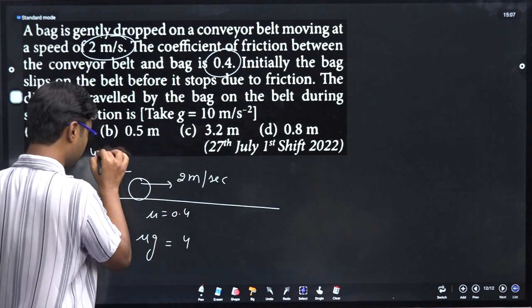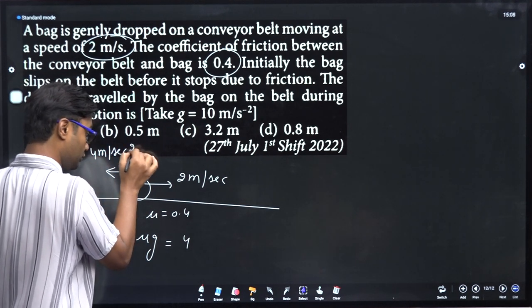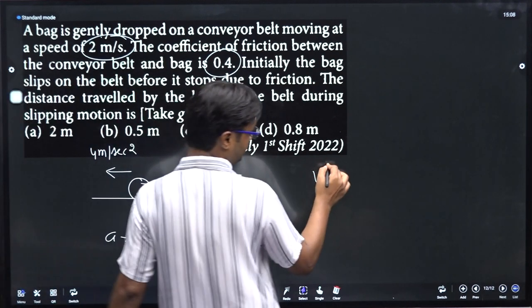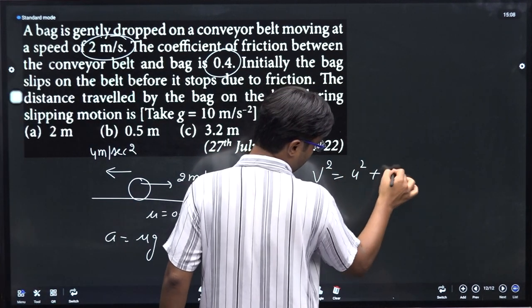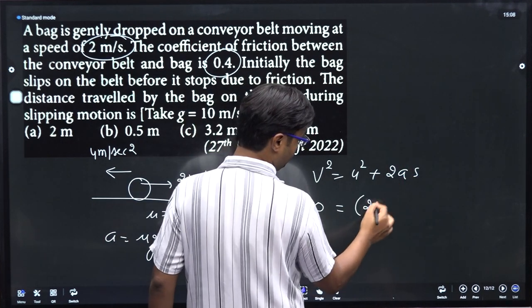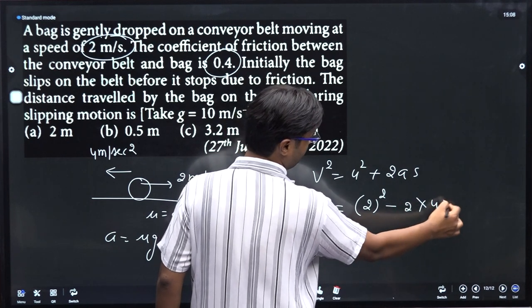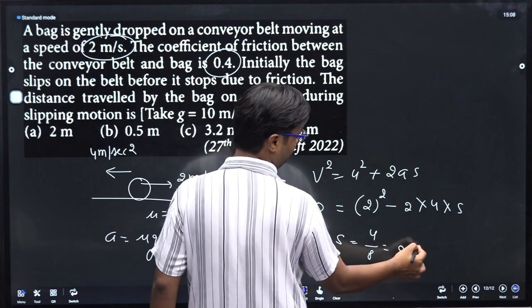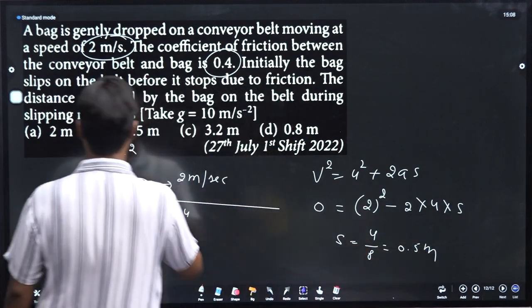It is 4 meters per second squared of retardation. So third equation is the answer. V squared equals U squared plus 2AS. V value is 0, U value is 2 squared, minus 2 into 4 into S. S value is 4 by 8, which is 0.5 meters. The answer is 0.5 meters.